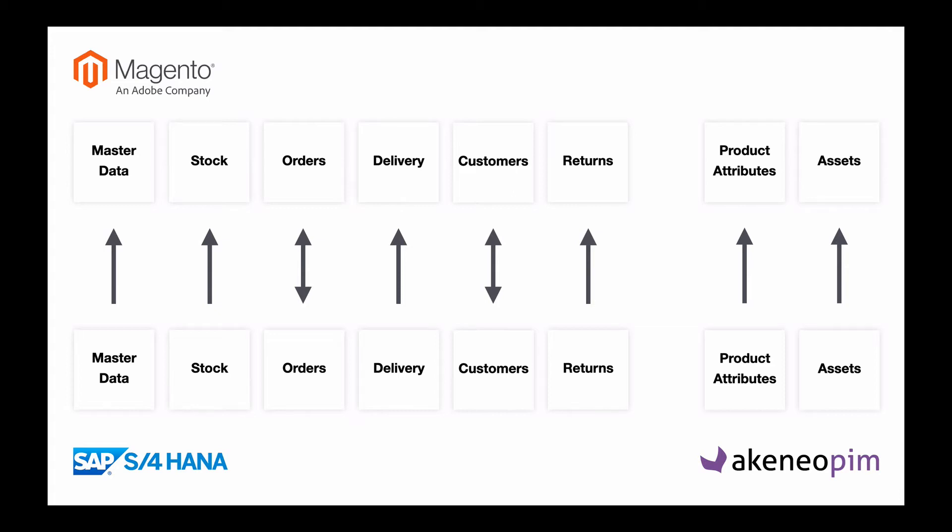Sometimes if there is no PIM available, you can manage product attributes directly in Magento. The same applies to assets — an asset is usually a product picture. In case you have a PIM or a DAM (document asset management system), pictures are stored there. If you don't have this, you can also manage product pictures directly in Magento. This is a typical full ERP integration.